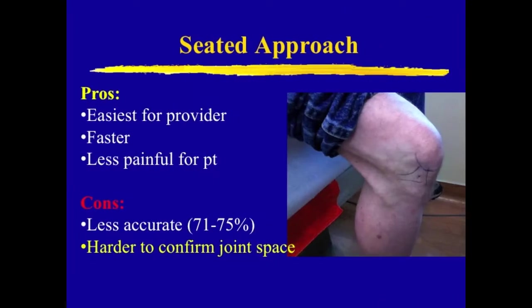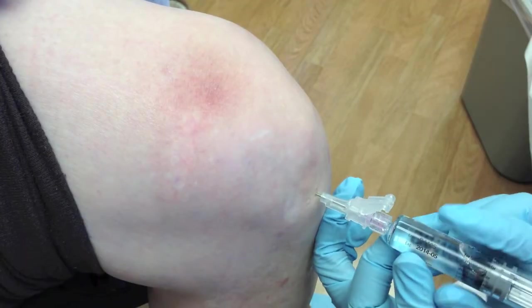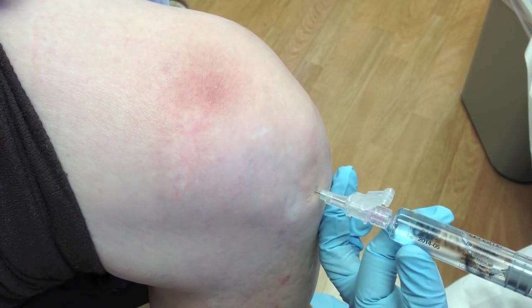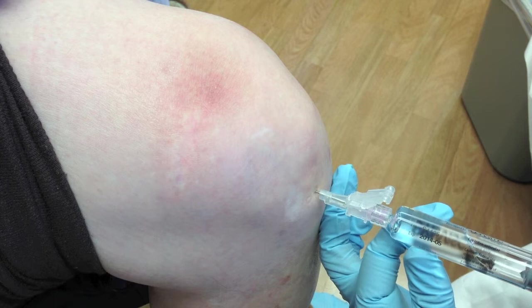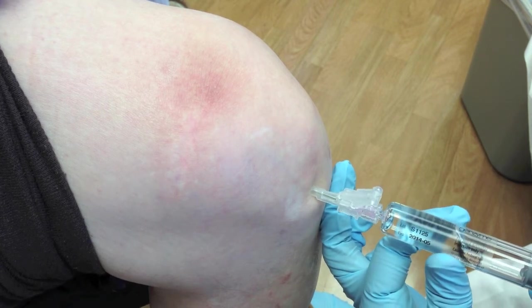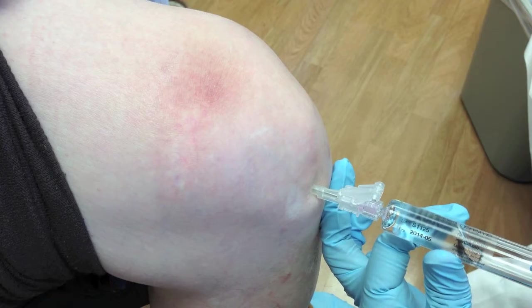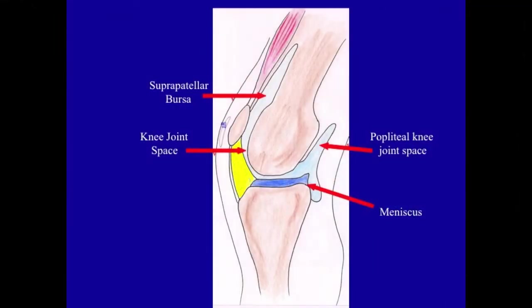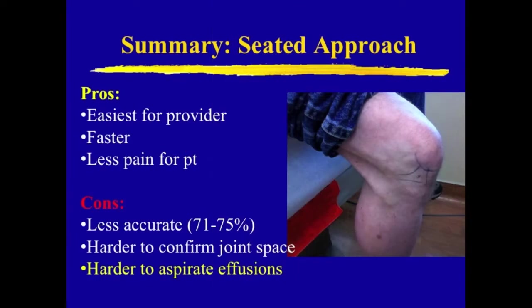Even if the needle is long enough to reach the patient's knee joint space, another disadvantage of the seated position is a lower likelihood of a confirming synovial flashback, because much of the fluid of an effusion is in the suprapatellar bursa and thus is less accessible from the infrapatellar approach. For the same reason, it's harder to aspirate and drain an effusion from the seated position unless the effusion is very large.